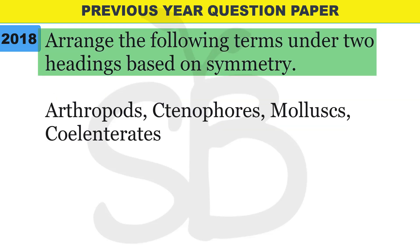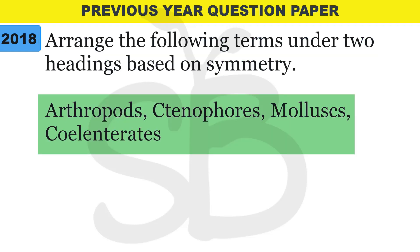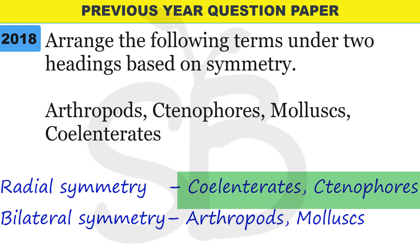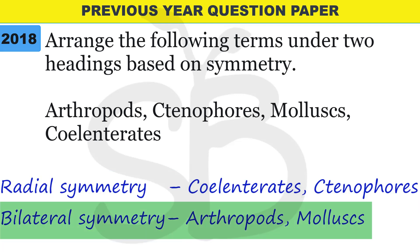Next question from 2018: arrange the following terms under two headings based on symmetry - Arthropods, Ctenophores, Mollusks, and Cnidarians. Cnidarians and Ctenophora show Radial Symmetry - each radial plane divides them into two equal halves. Arthropods and Mollusks show Bilateral Symmetry.